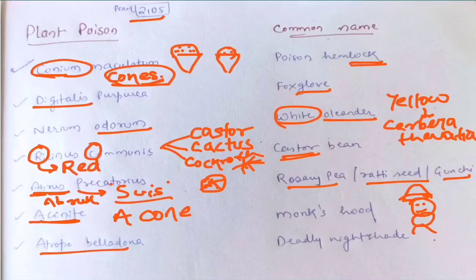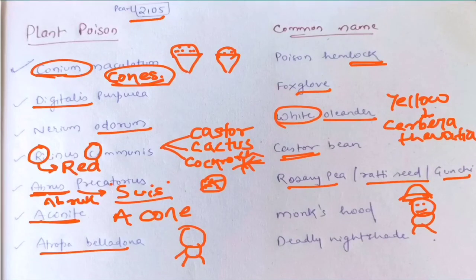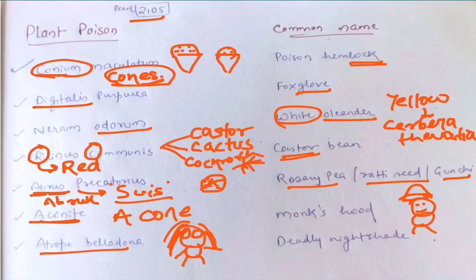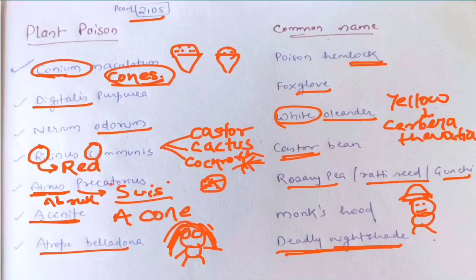The next is Atropa belladonna. Belladonna is a very beautiful girl — 'bella' or 'donna.' The effect of atropa on the eyes is anti-muscarinic, so it dilates the pupil. So this bella donna, this girl, has very beautiful big eyes, and with these big eyes she looks deadly — hence the name deadly nightshade.